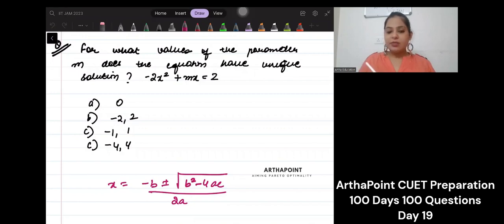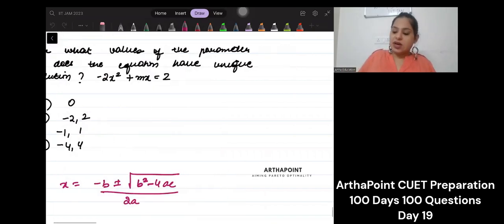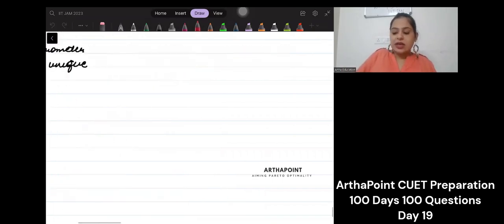For what value of the parameter m does the equation have a unique solution? So if you remember, whenever we write our equation as ax squared plus bx plus c equals 0,